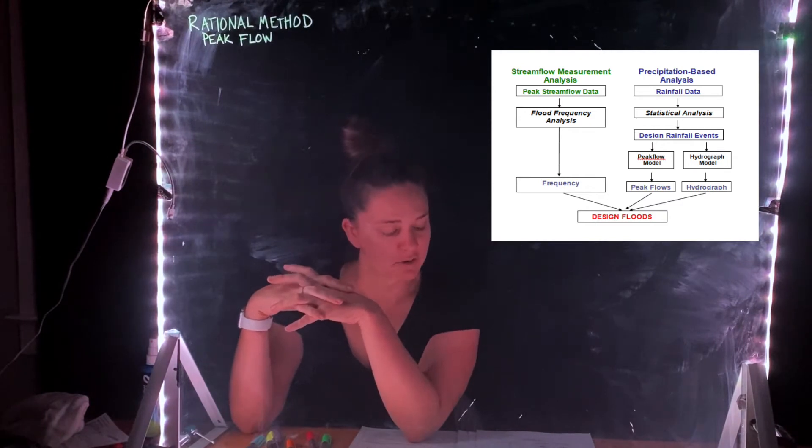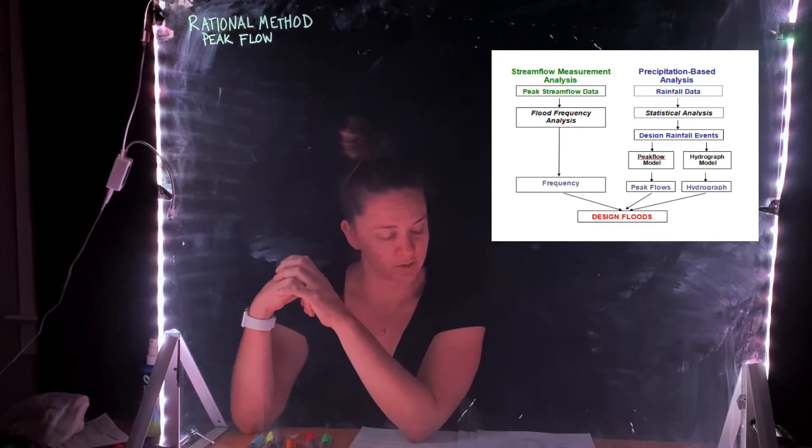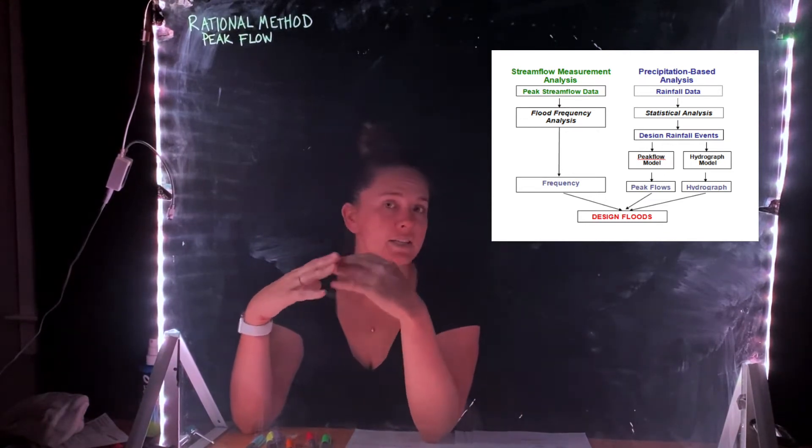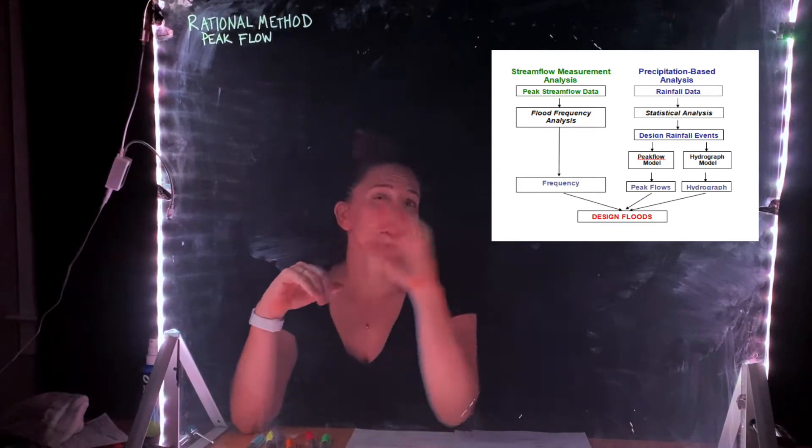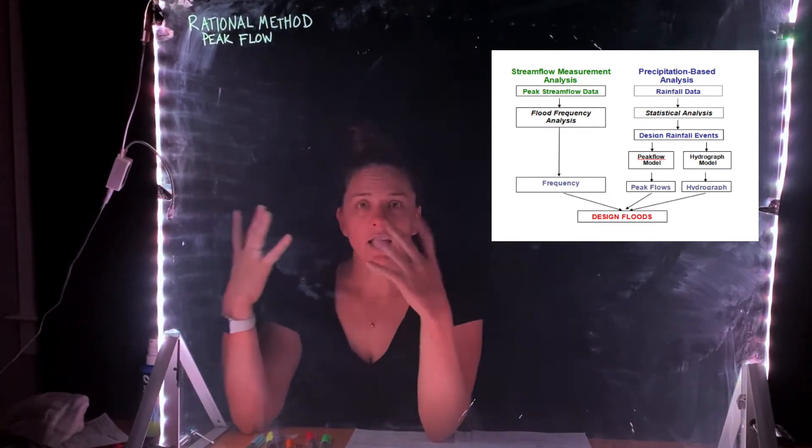And we first did the stream flow measure analysis using peak stream flow, using a flood frequency analysis, which allowed us to get to our design flows. We could find 10 year, 25 year, 100 year floods. And now we're going to look a little bit more closely at the hydrograph.